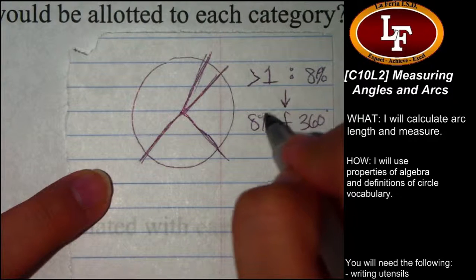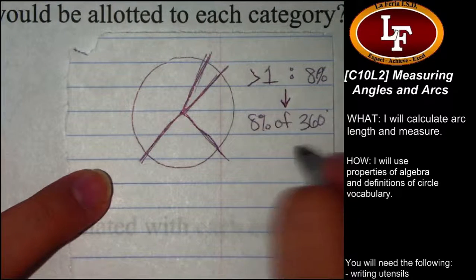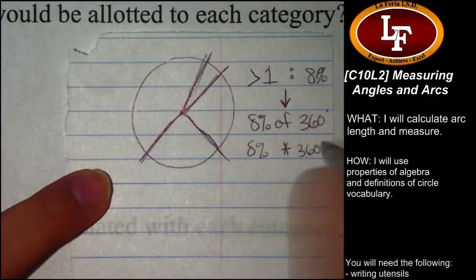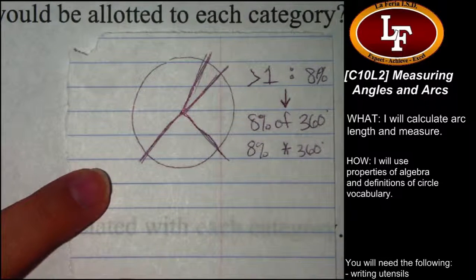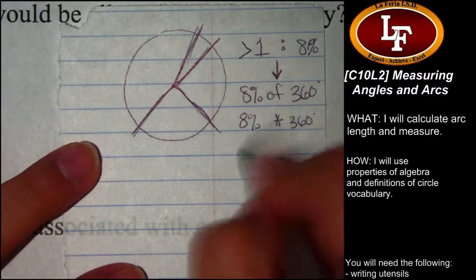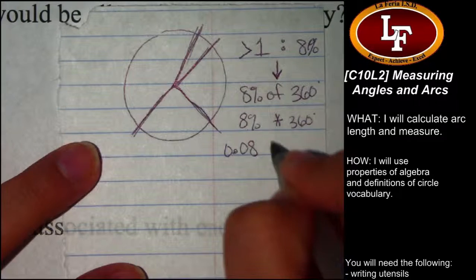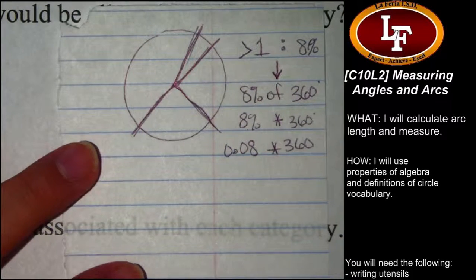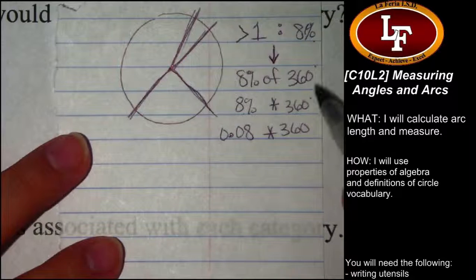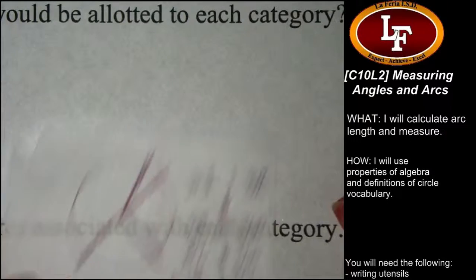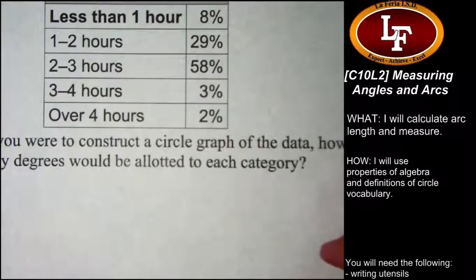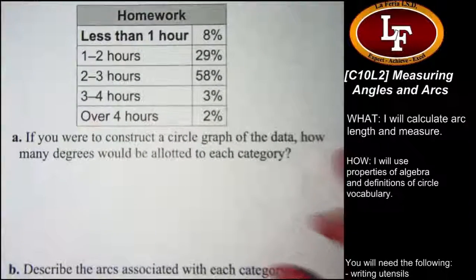Looking at the first category, less than one hour, 8% of the student population said that. We want 8% of the total rotation of a circle, which is 360 degrees. In word problems, 'of' usually means multiplication. So 8% times 360. Converting 8% to a decimal gives 0.08 times 360, which gives us the number of degrees. Use the same technique for each category and show your work.